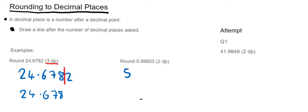The second one gets a little more complicated. It says to round to two decimal places. The first decimal place is the first 9, and the second decimal place is the second 9, so my line goes down after the second 9.